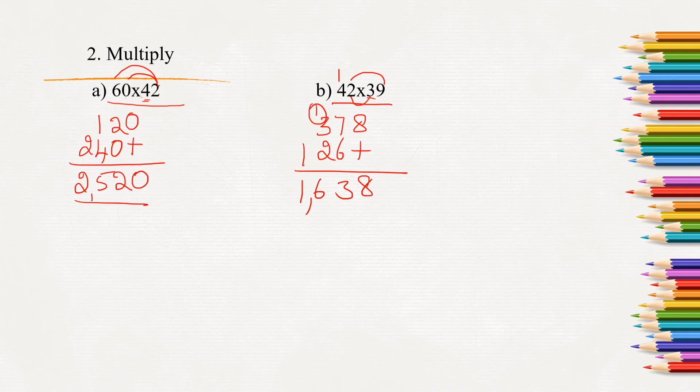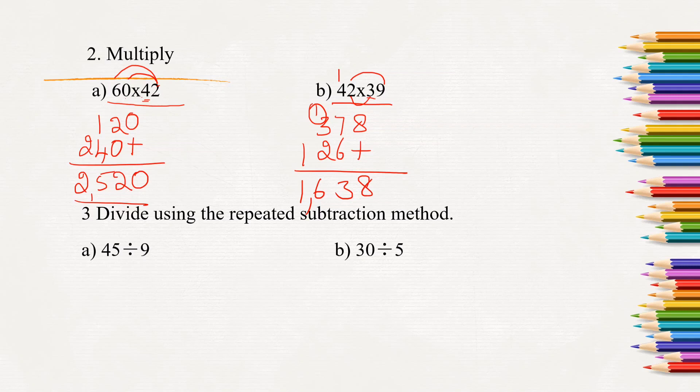Look at the next question, divide using the repeated subtraction method. Here we know that division is repeated subtraction. So here 45 minus 9 equals 36. 36 minus 9 equals 27. 27 minus 9 equals 18. 18 minus 9 equals 9 and 9 minus 9 equals 0. So how many times we subtracted, 1, 2, 3, 4, 5 times. So 45 divided by 5 equals 5.